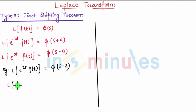In the same way if it is Laplace of e raised to minus 3t times f of t, then that gives me phi of s plus 3.